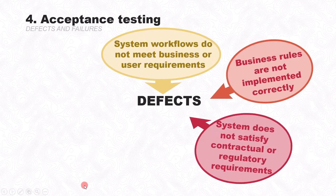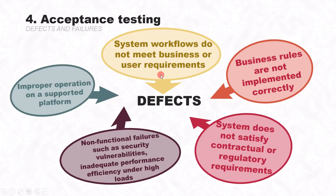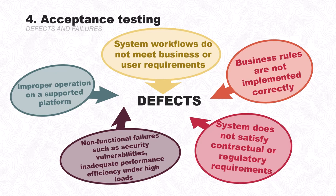Now let's look at defects found during acceptance testing. The first is system workflows do not meet business or user requirements. In acceptance testing we focus on business requirements and check whether the built system conforms to business rules. The second defect is business rules are not implemented correctly. The third is the system does not satisfy contractual or regulatory requirements — since the complete system is available, we can check if it meets the contract or regulatory standards.